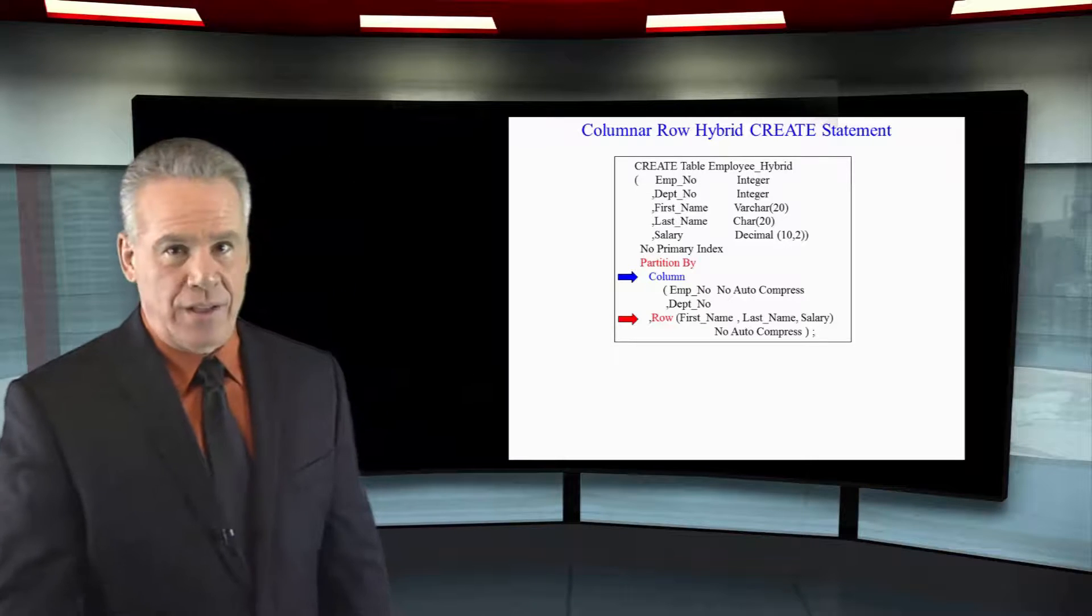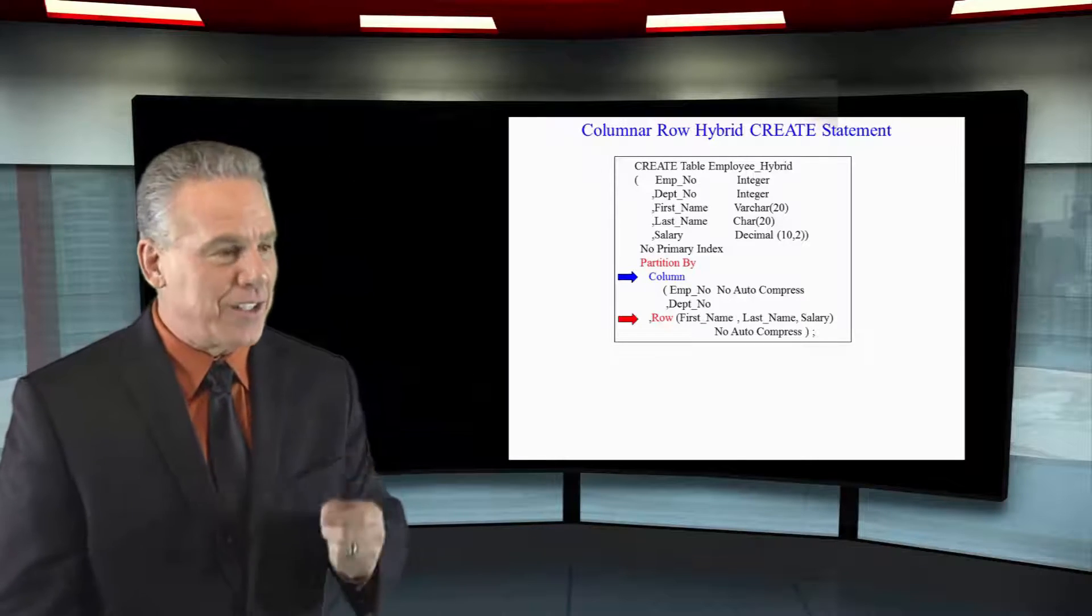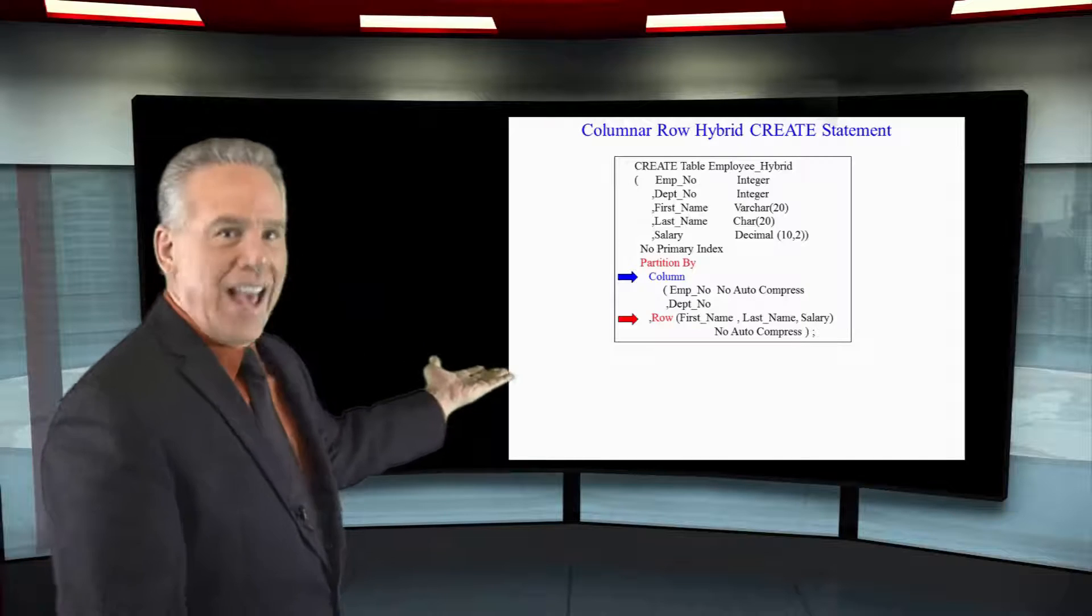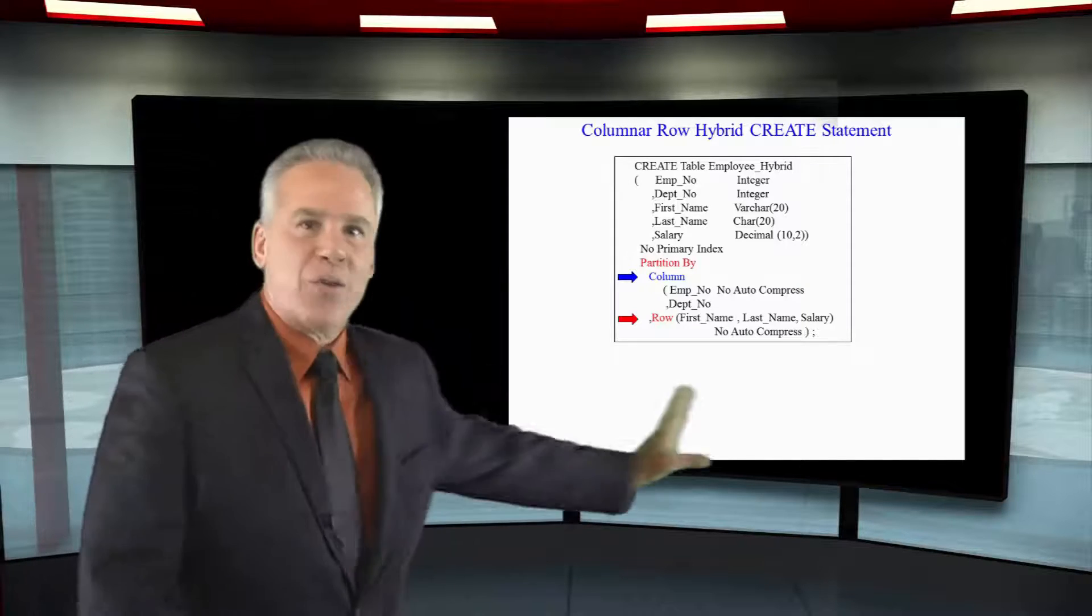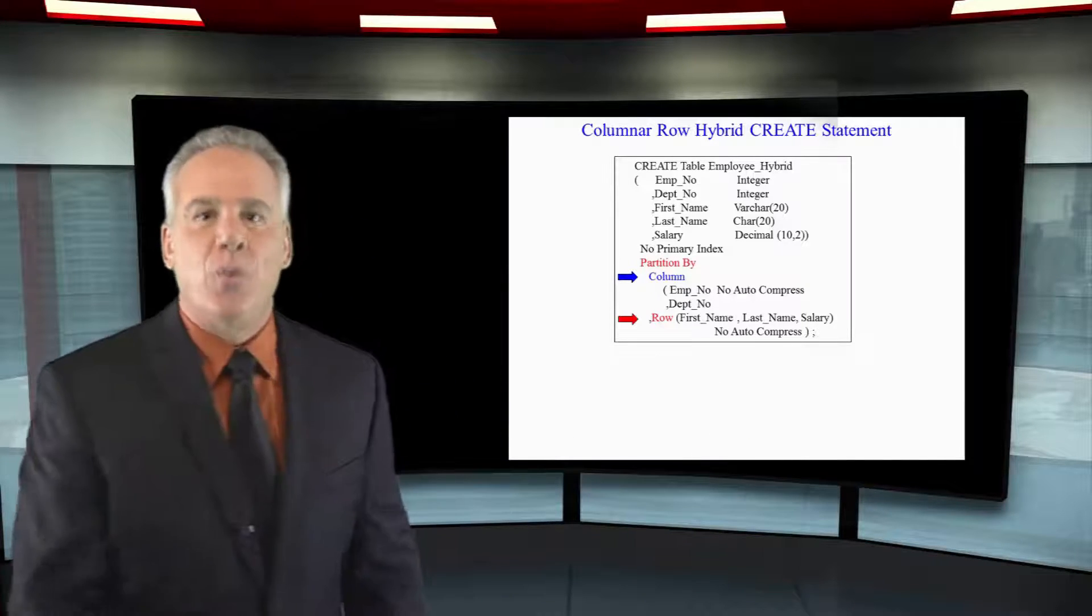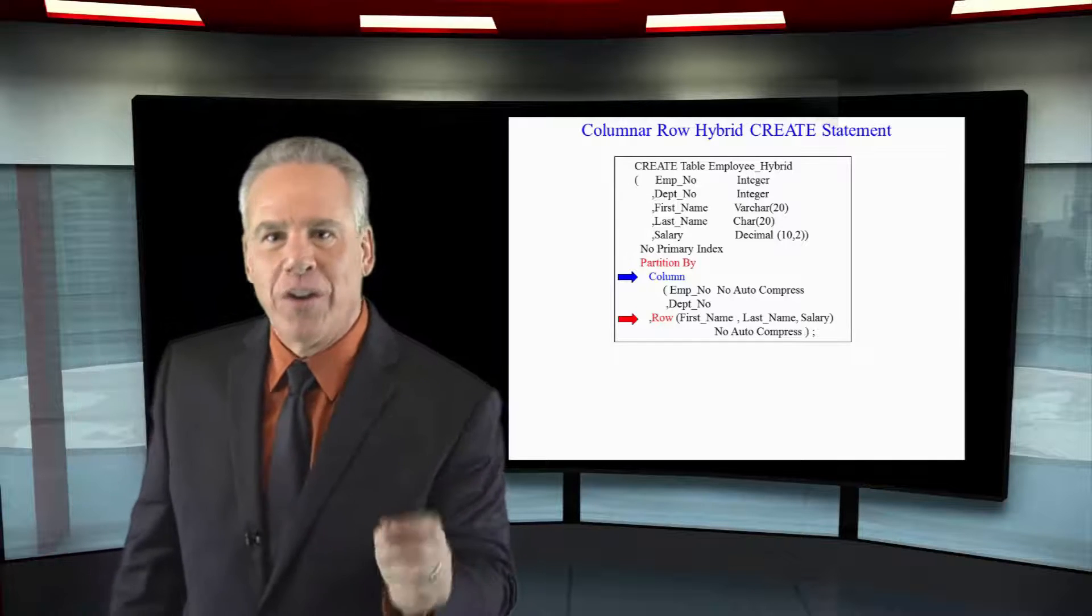But in this case, hey listen, this is really interesting, because we've got two of these as column containers, and then the rest of them as a row based. We can mix and match, and this is called a hybrid.